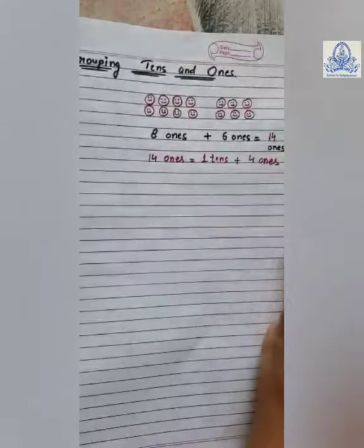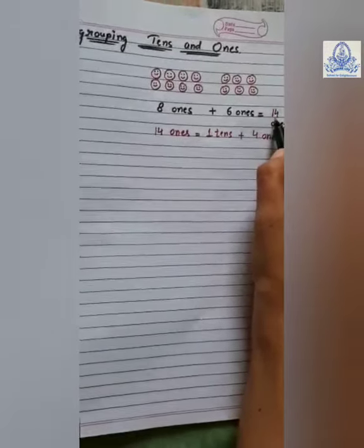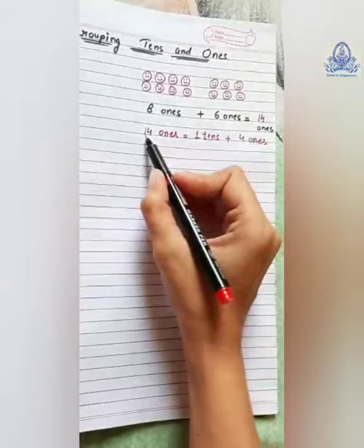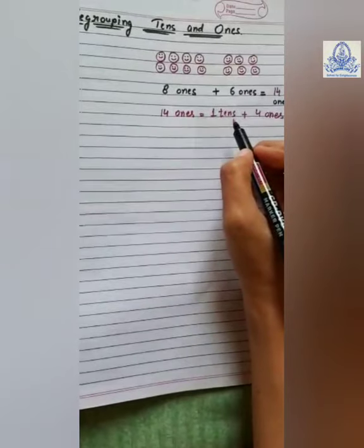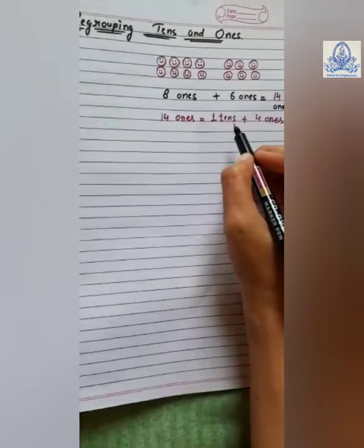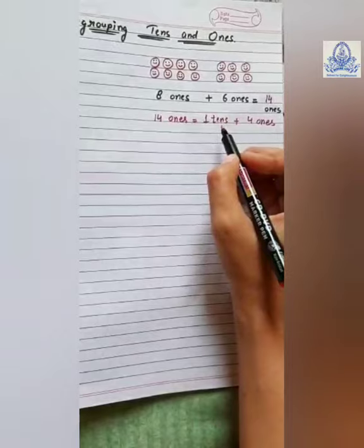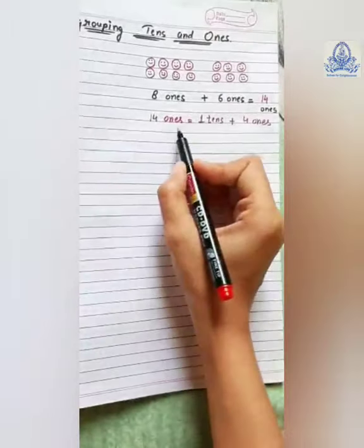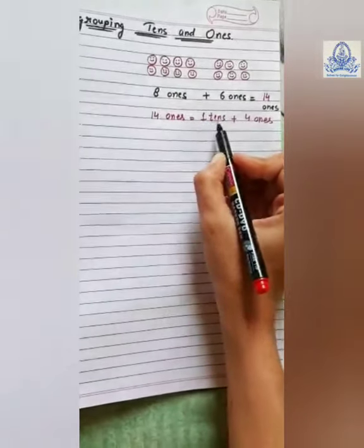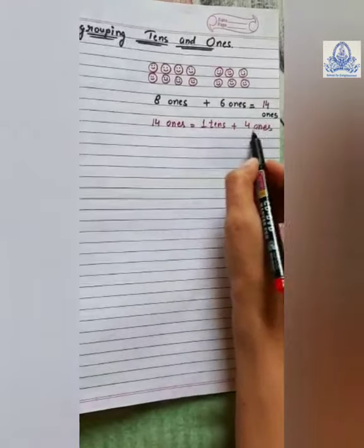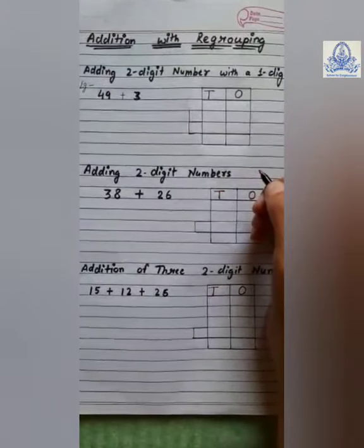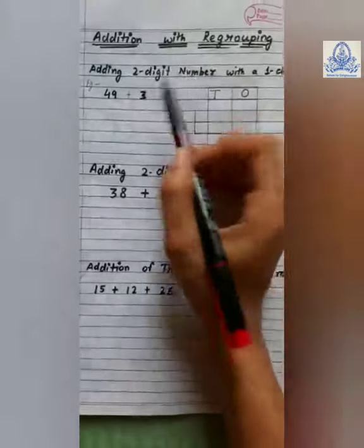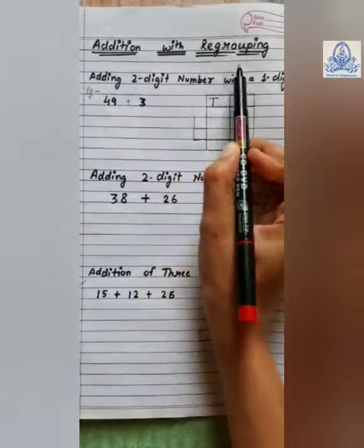We send this one to the tens place. So, this one will be transferred to tens place. Fourteen ones equals one ten plus four ones. Now, we will do addition with regrouping.